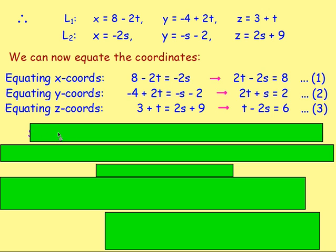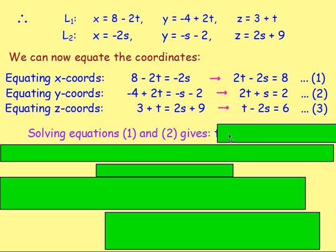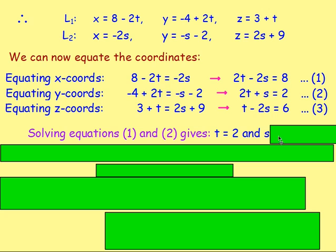Taking equations 1 and 2 and solving them as simultaneous equations: subtracting equation 2 from equation 1 eliminates t, giving −3s = 6, so s = −2. Substituting back gives t = 2. We end up with t = 2 and s = −2.